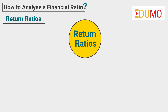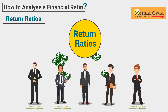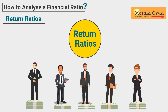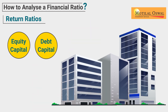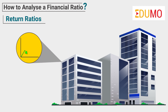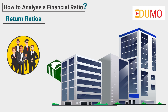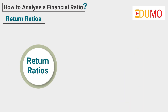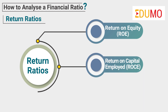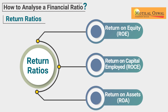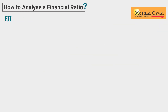Return ratios represent the return that the company generates, or has the ability to generate, for its shareholders. They basically show whether a company is utilizing its equity and debt capital efficiently in order to be profitable. Some of the return ratios include return on equity (ROE), return on capital employed (ROCE), and return on assets (ROA).